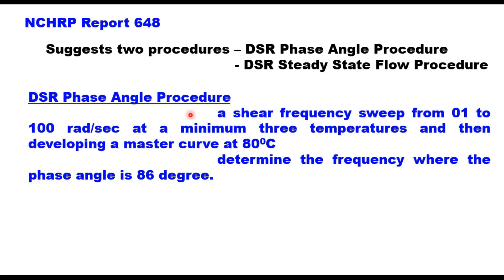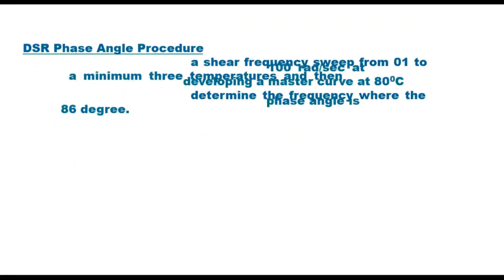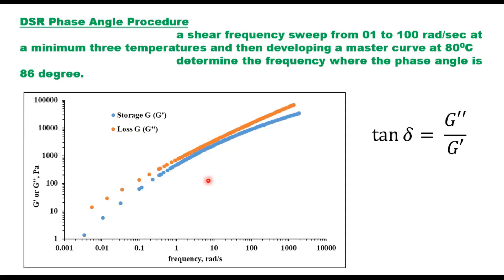The phase angle procedure is performed by conducting a shear frequency sweep test from 1 to 100 radians per second at a minimum of three temperatures, then developing a master curve at 80°C and determining the frequency where the phase angle is 86°. For a PG grade binder, on the x-axis you have frequency, and on the y-axis you have G′ (storage modulus) and G″ (loss modulus). The ratio of these two is tan(δ), where δ is the phase angle.